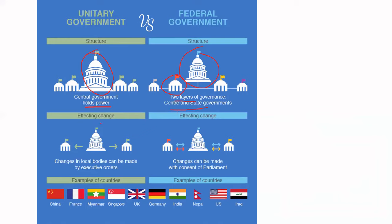Now, what about effecting changes? If there is a unitary form of government, changes in local bodies or elsewhere have to be done by an executive order, and that executive order comes from the center — then you can bring a change. Whereas, if we talk about the federal form of government, changes are made with the consent of the parliament, which of course has two different parts.